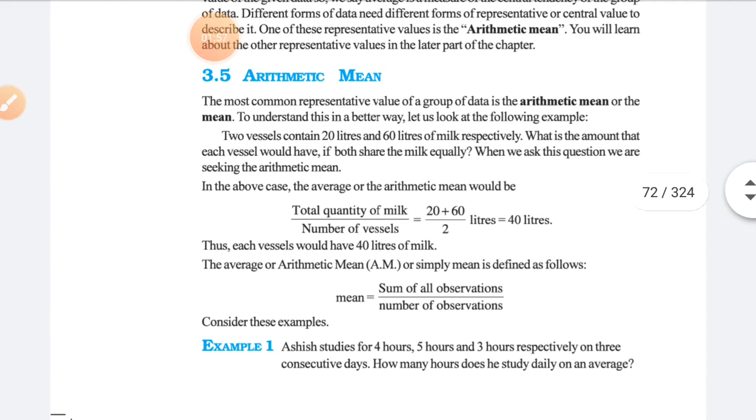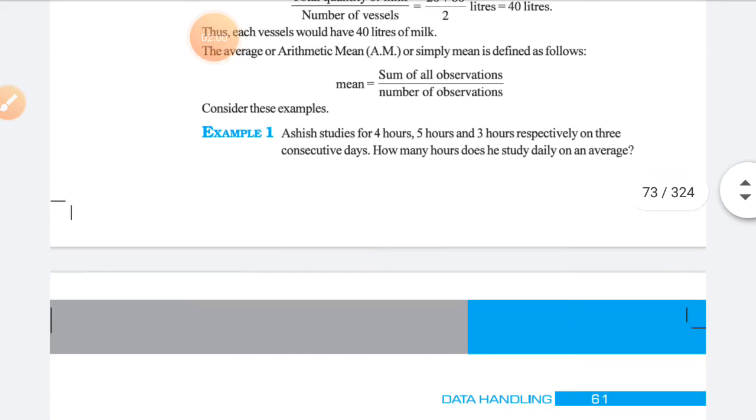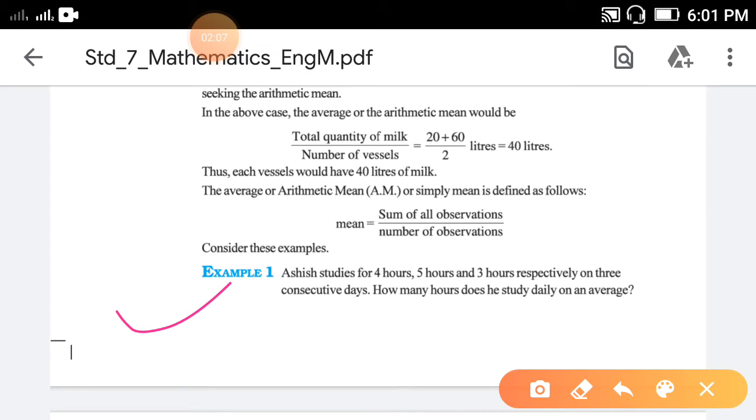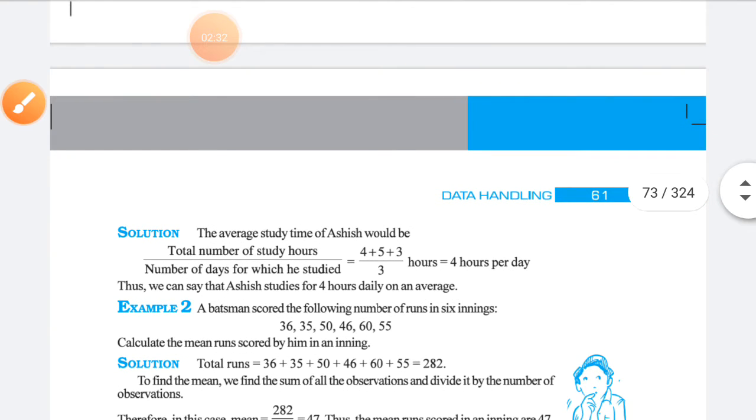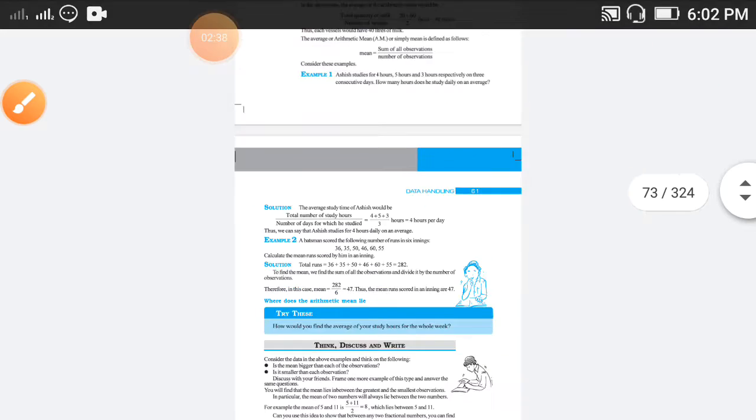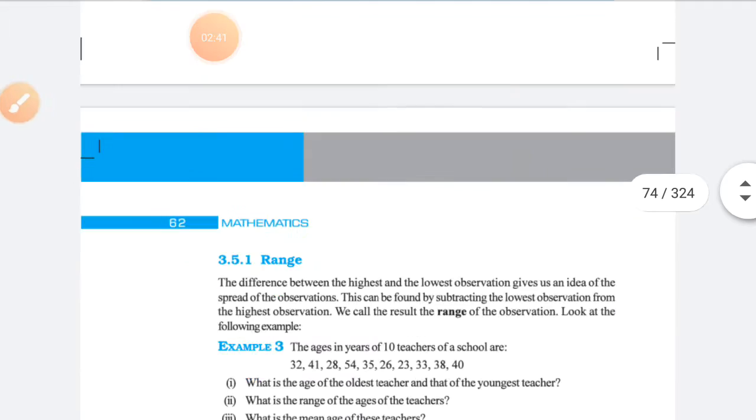Next, arithmetic mean. What is the meaning of mean, or how to find out mean? Here one example is given: Ashi studies for four hours, five hours, three hours respectively on three consecutive days. How many hours does he study daily on an average? It means here you have to find out mean. So here the formula is given: sum of all observations divided by number of observations. So here how many observations are there? Three: one, two, and three. So you have to add four plus five plus three, and total three observations are there, so you have to divide it by three. So you will get four as the answer—four hours per day.